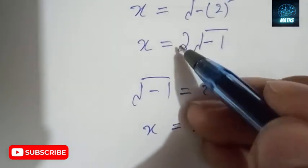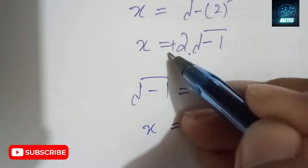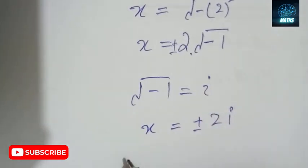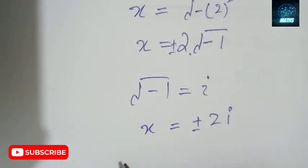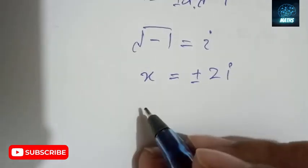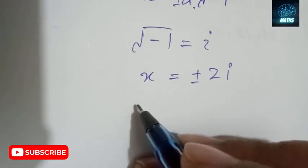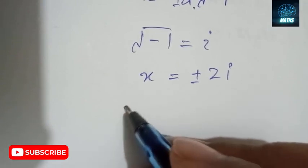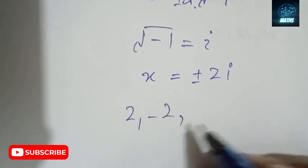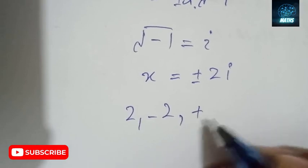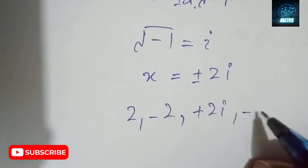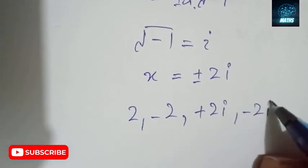So here we can group all four roots. Our algebraic expression has four roots: 2, -2, +2i, and -2i.